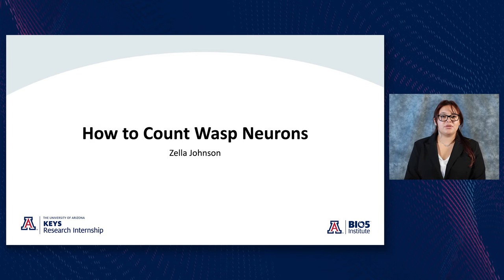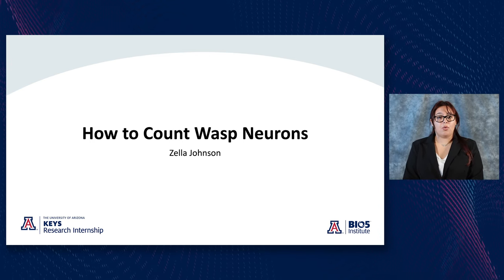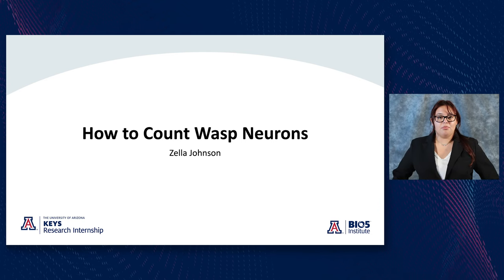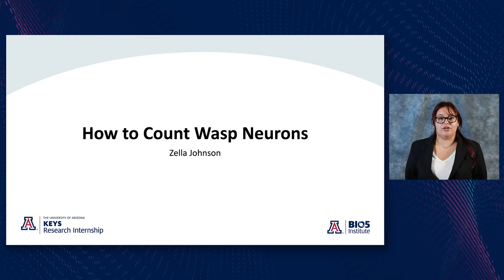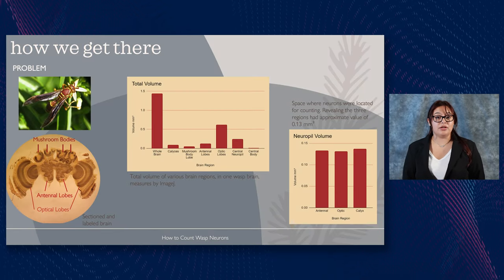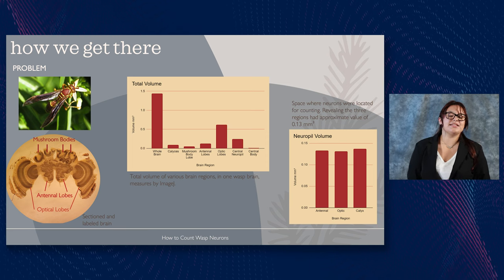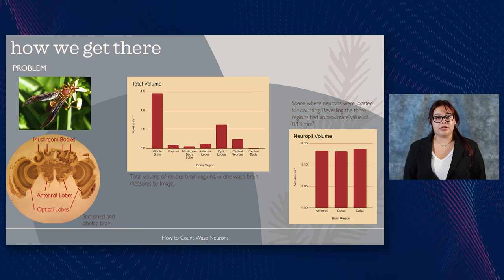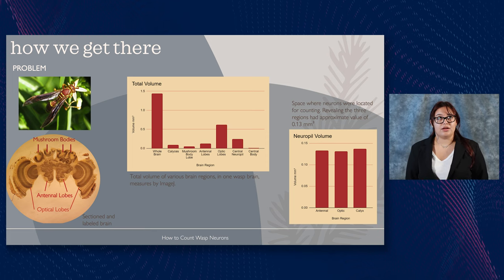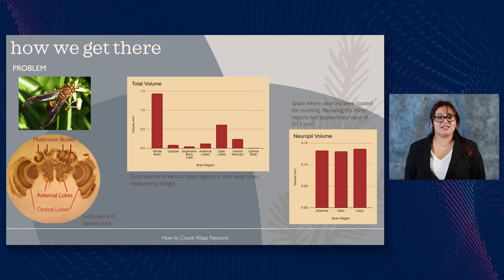Hello, my name is Ella Johnson. I was in Dr. Gronenberg's lab this summer. We worked on counting wasp neurons to fulfill more information about their neurobiological workings. Initially, we go out and catch wasps at Old Main Fountain on campus, then dissect their brains, prepare them, and section them into very thin slices.